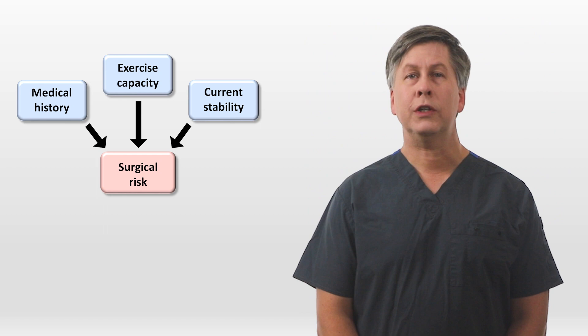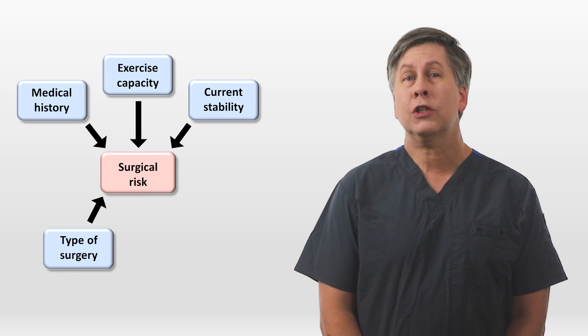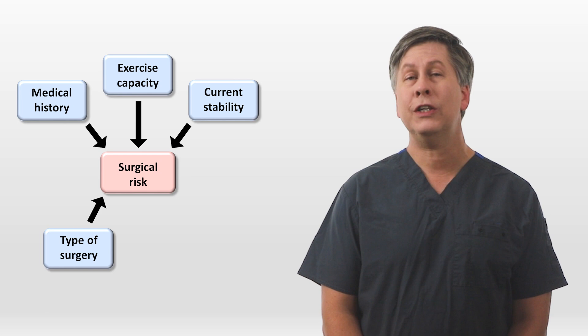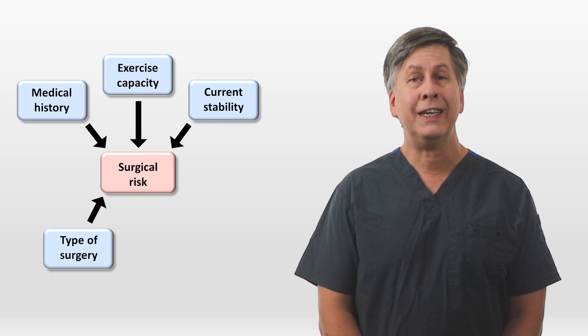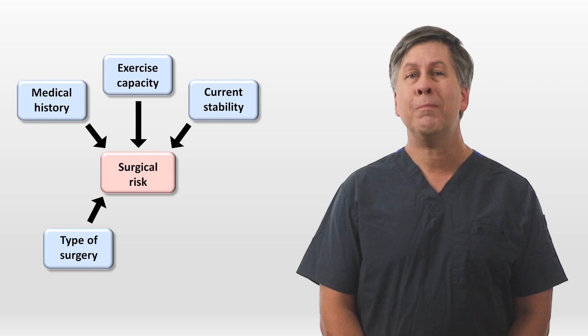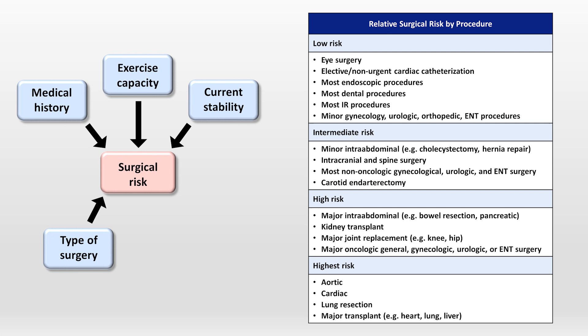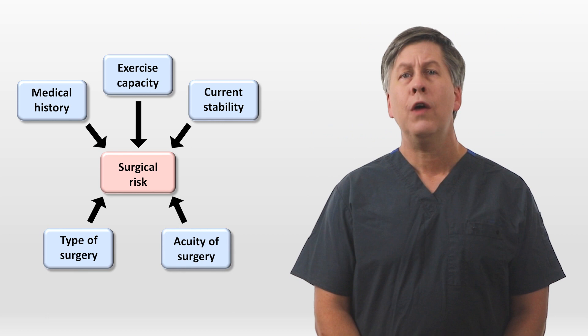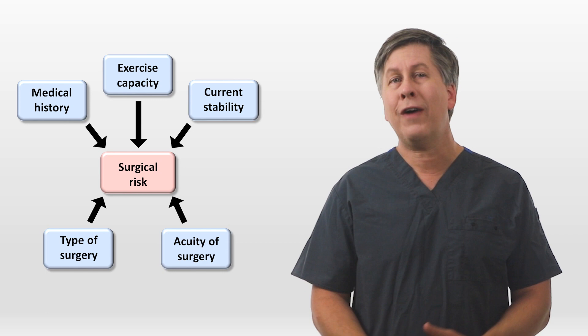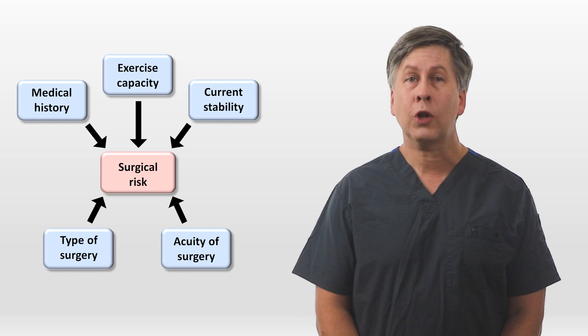The last two categories are related to the surgery itself. There is the specific type of surgery — some procedures carry higher risk than others, depending on the type of anesthesia required, duration, technical difficulty, and typical volume of blood loss. The lowest risk category includes procedures not requiring general anesthesia, many of which are short laparoscopic procedures, while the highest risk category includes heart, lung, aortic, and most transplant surgeries. High acuity procedures are also more likely to be performed on a weekend or at night when less staff are present in the event of an acute complication.